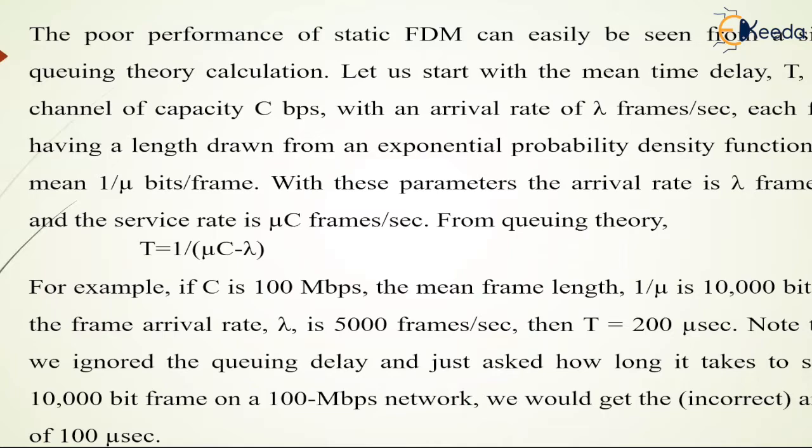The poor performance of static FDM can easily be seen from a simple queuing theory calculation. Let us start with a mean time delay T for a channel capacity of C bits per second with an arrival rate of lambda frames per second. Each frame has a length drawn from an exponential probability density function with mean 1/μ bits per frame. With these parameters, the arrival rate is lambda frames per second and the service rate is μC frames per second. From queuing theory, T = 1 / (μC - lambda).